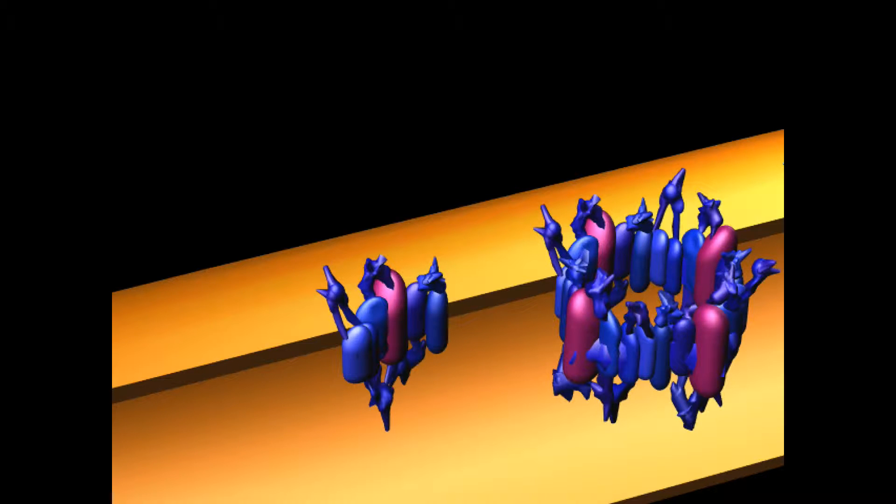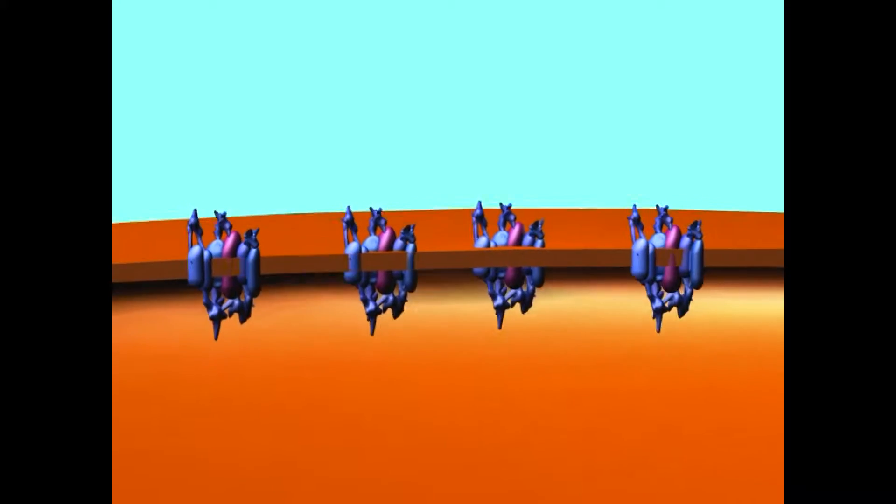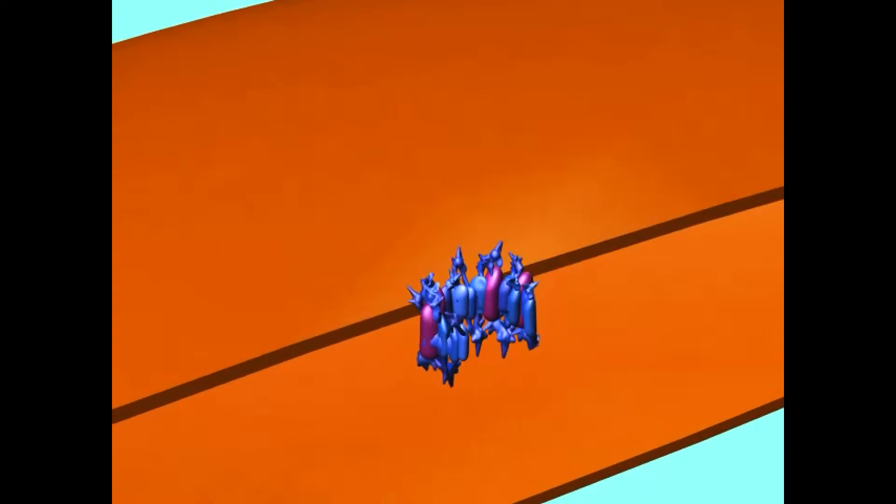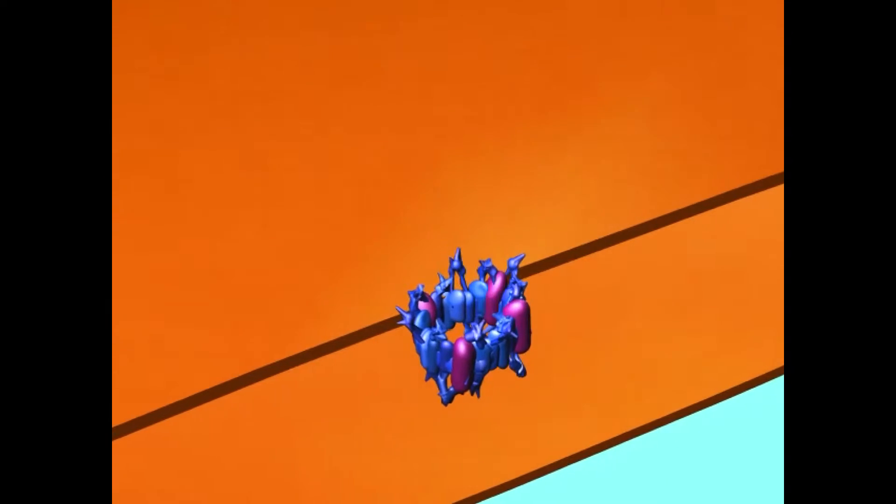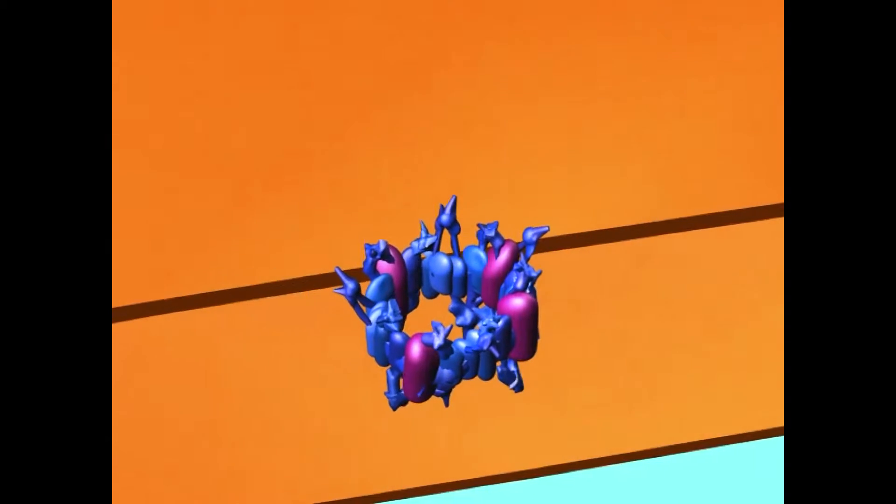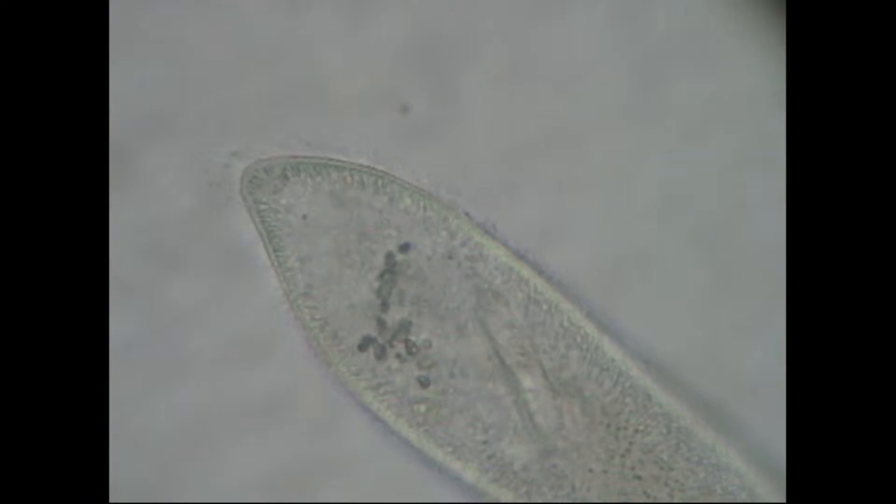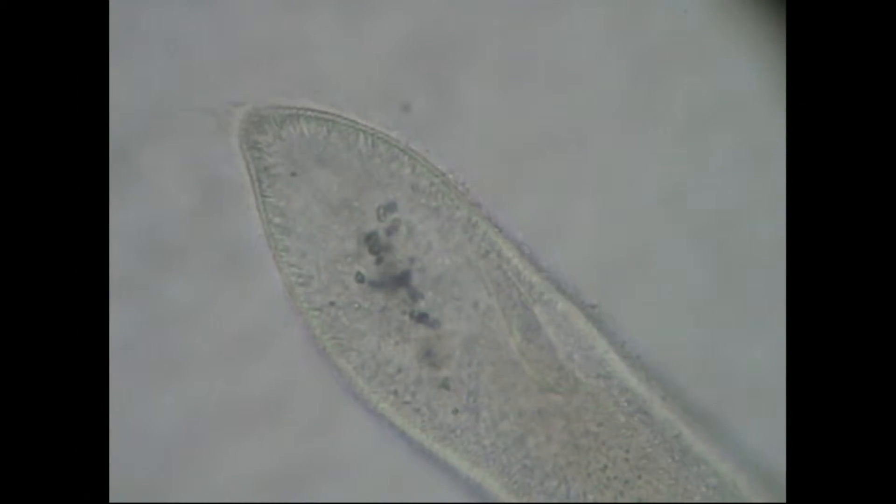Prior to the evolution of eukaryotes, gene fusion united multiple ancestral potassium channel genes to form a larger, more complex gene which contained all four necessary subunits to form a functioning ion channel.